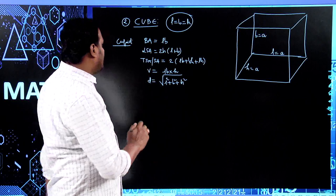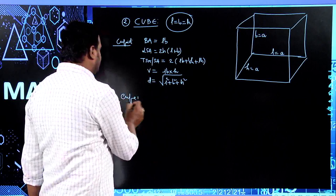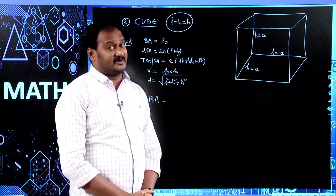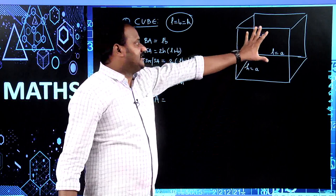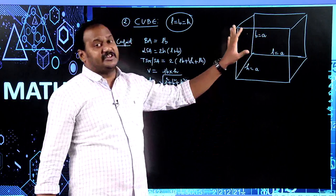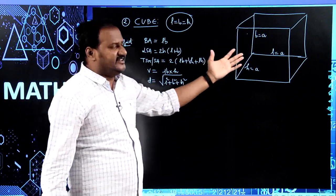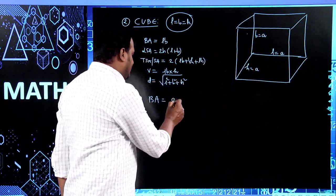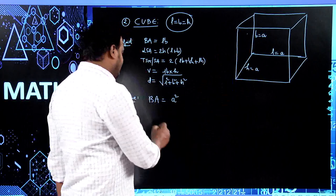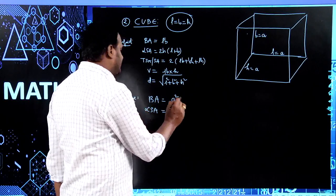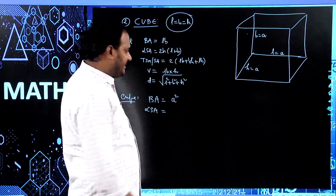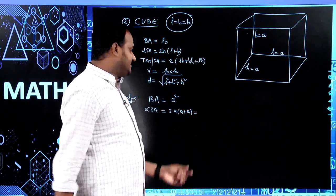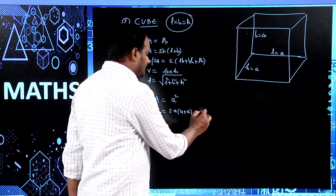Coming to the base area of a cube: a cube is nothing but a square-based prism, so the base is in the shape of a square. When the side equals small a, the area of a square equals a². So the base area of a cube equals a². For lateral surface area, using 2H(L+B) = 2a(a+a) = 2a × 2a = 4a².